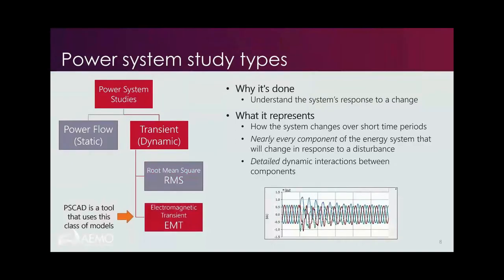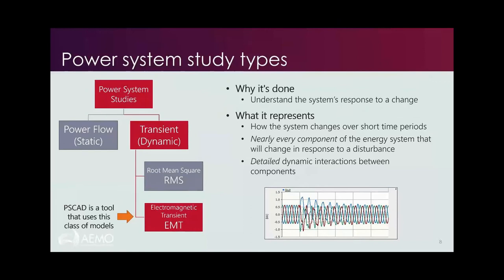Extending from RMS is EMT — electromagnetic transient simulations. It does the same thing as RMS: looking at how the system responds to a disturbance over short periods, except in far greater detail. The tool we use, PSCAD, essentially means we have no limits on what we simulate. We can model transients, full transmission line models, detailed transformer models, DC, and as much detail as we want. We can model nearly every component that changes in response to a disturbance and study detailed dynamic interactions between components. The downside is that it is computationally slow compared to RMS type studies.